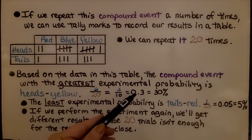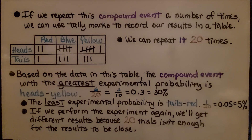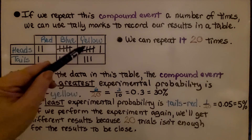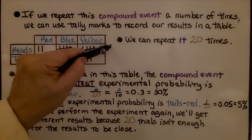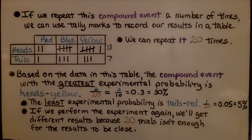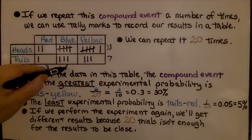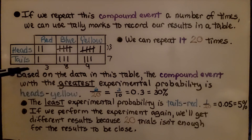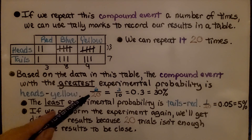We can write three-tenths as a decimal, 0.3, or as a percent, 30%. The sum of the row totals — 13 plus 7 — equals 20. The column totals — 3, 8, and 9 — also equal 20. So the row totals equal the column totals, and both equal the number of trials, 20. This is the denominator of the experimental probability ratio.